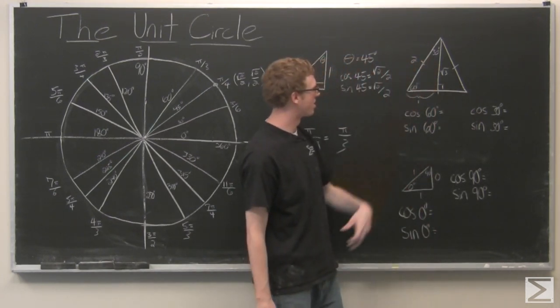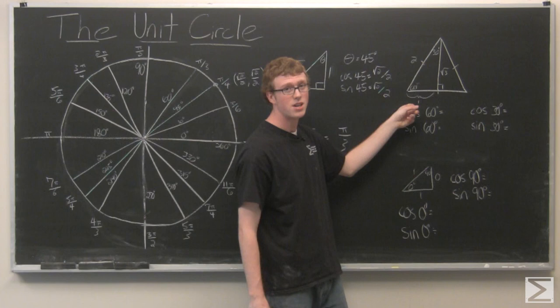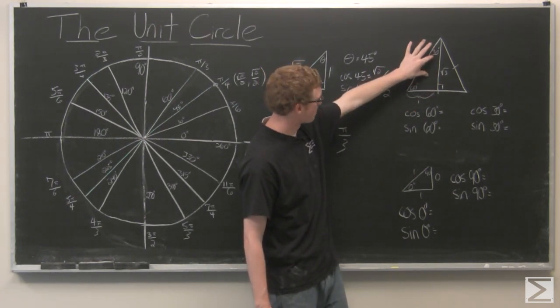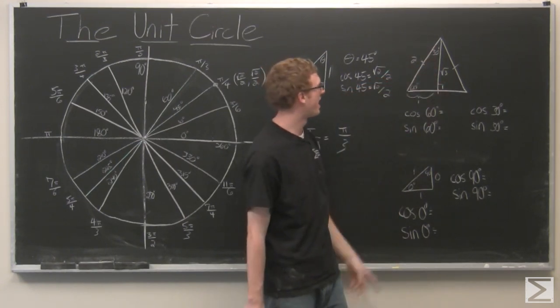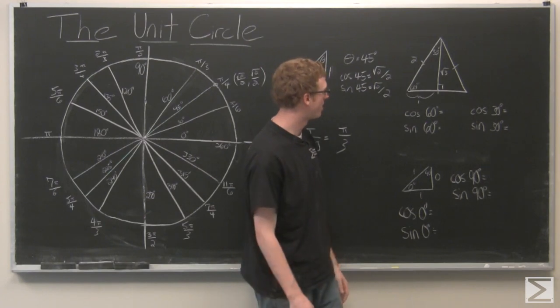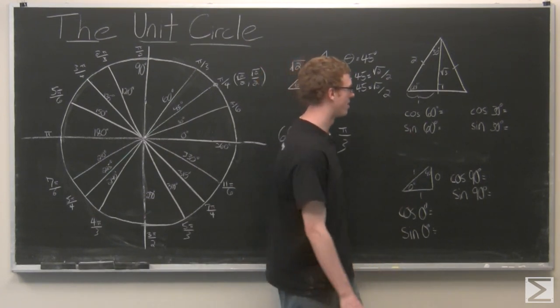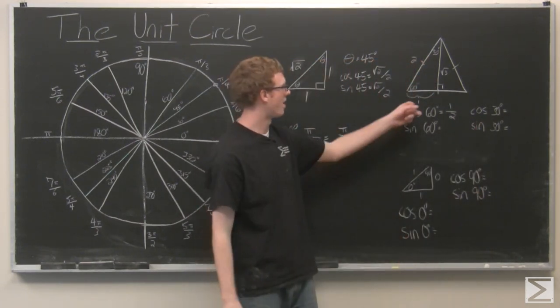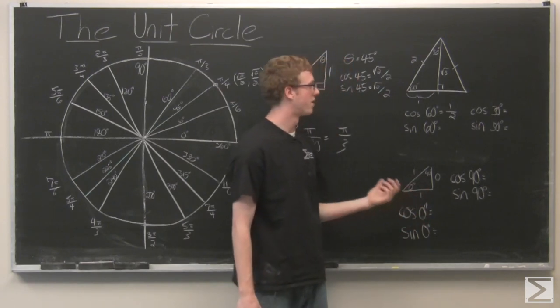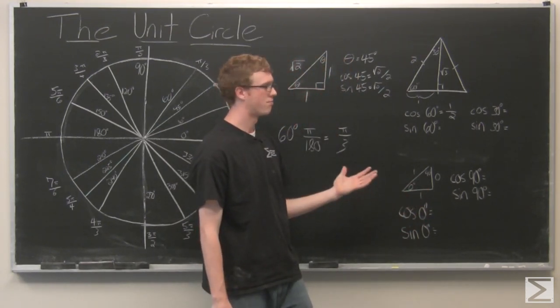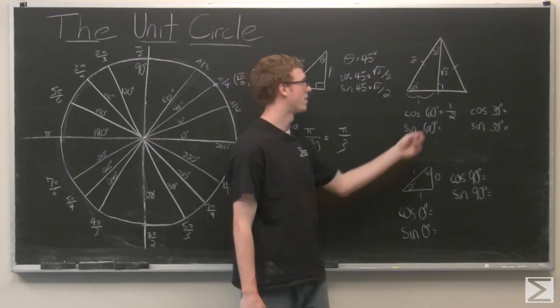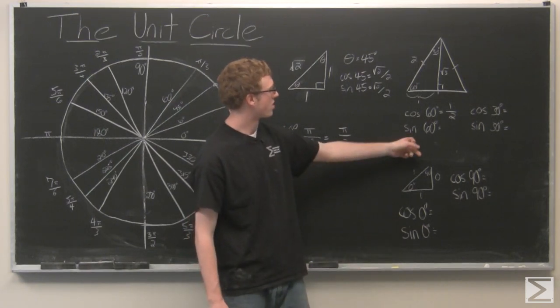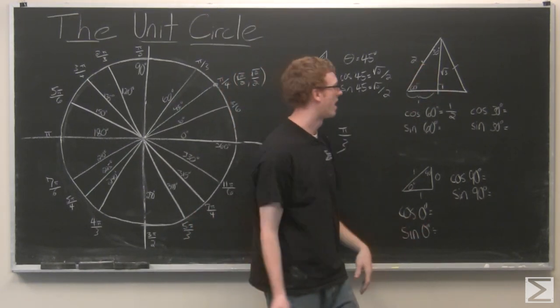We're going to have theta equals 60 degrees first. Cosine of theta is adjacent over hypotenuse. We know that the altitude that cuts that angle up there in half is also going to bisect that segment. So we have cosine of 60 degrees is just one half. Now we could use these two values 1 and 2. We have 2 squared is 4 minus 1 squared is 4 minus 1 which is 3 and then square root of 3. So we have a squared plus b squared equals c squared for this right triangle. So sine of 60 degrees opposite over hypotenuse is just rad 3 over 2.